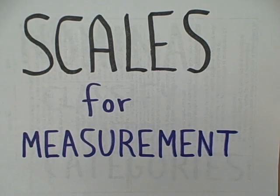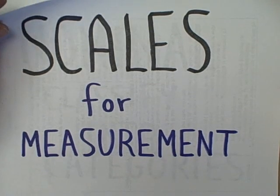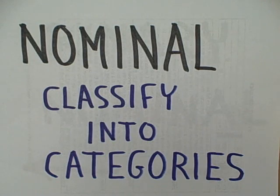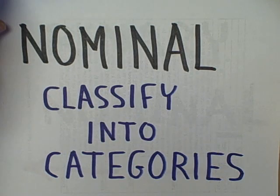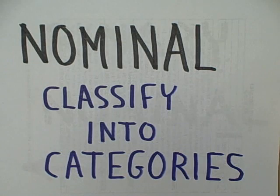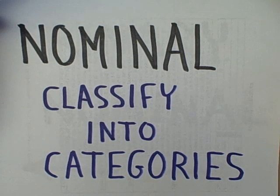This Headless Professor video deals with scales for measurement. We're going to start with the simplest of all measurements, and that is nominal scaling. What that means is that we're going to take each individual case and classify it into a specific category. It's important to distinguish between binary nominal scaling, in which we only have two categories, and multiple nominal scaling, in which we have more than two categories.